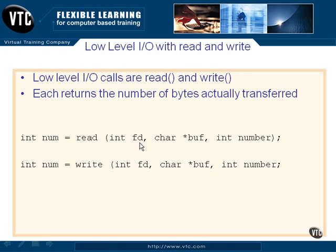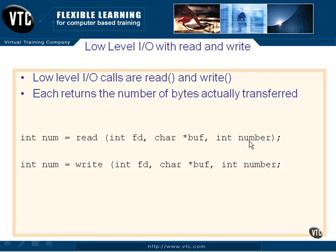If you take a look here, read starts out with a file descriptor, which is an integer. As we know, zero, one, and two are standard in, out, and error. We also have a character buffer, star buff — that will be a character pointer. This is the address of an array that is going to be holding our data after the read. The number is how many bytes to read from this file descriptor. If you put a one here, that's unbuffered input, and you'll read one byte at a time.